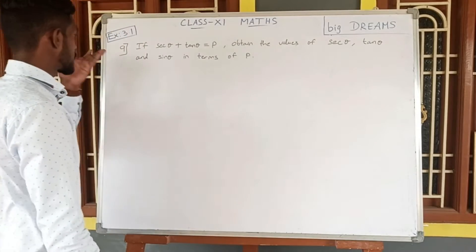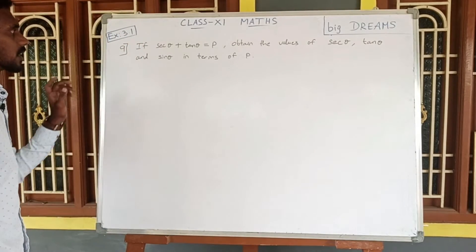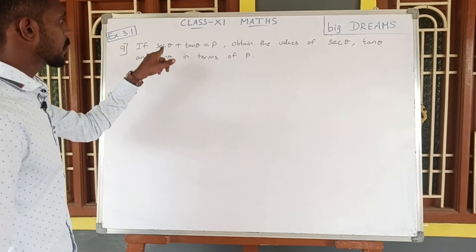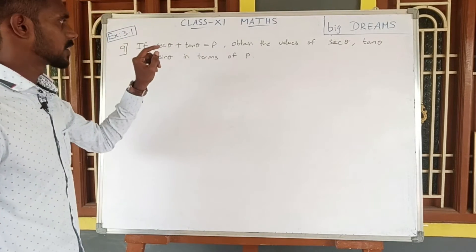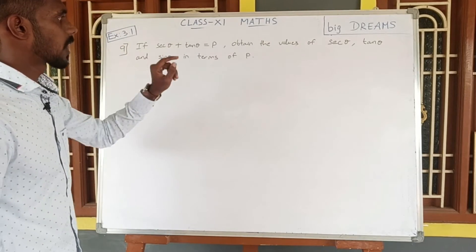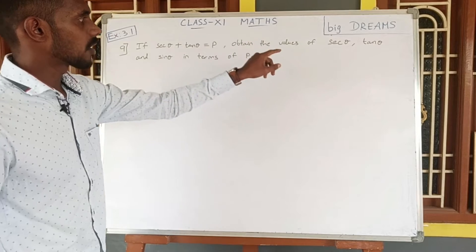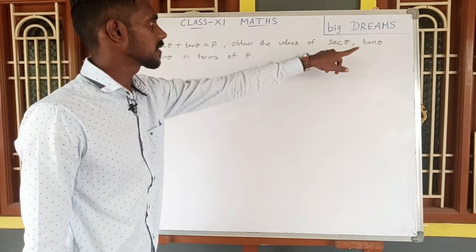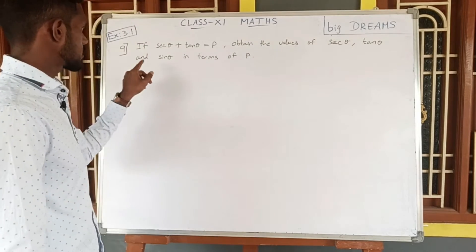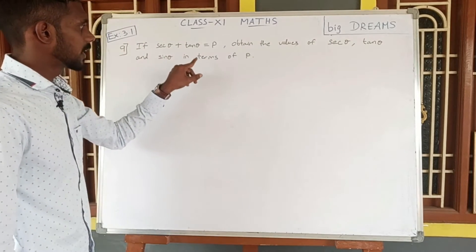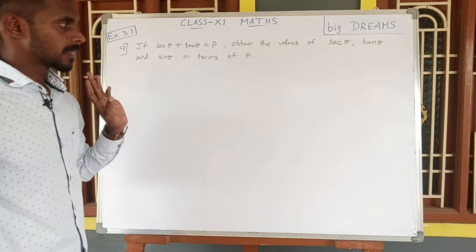Students, let us see question number 9. If secant theta plus tan theta is equal to P, obtain the values of secant theta, tan theta and sin theta in terms of P.